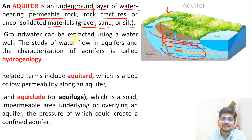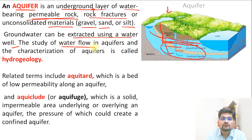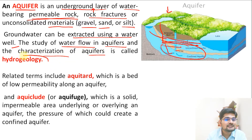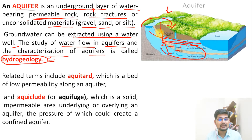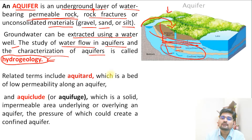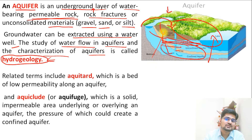Groundwater can be extracted using a water well. The study of water flow in aquifers and the characterization of aquifers is called hydrogeology, which is a major component of geology. Simply put, geohydrology is largely part of the surface as well — it is part of geomorphology and geography. It is not just about isolation but about the interaction of underground and surface features.